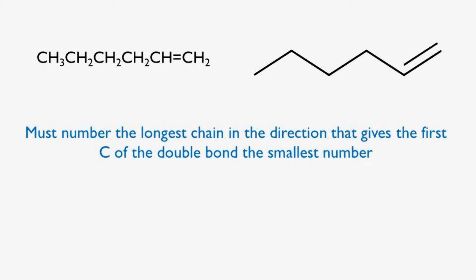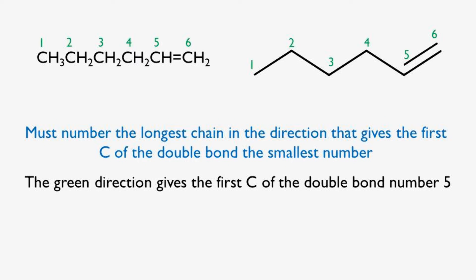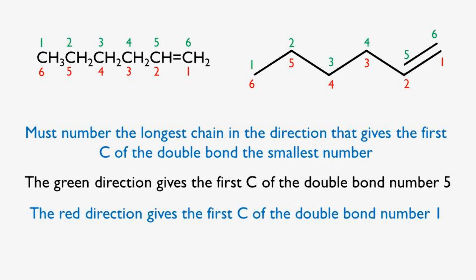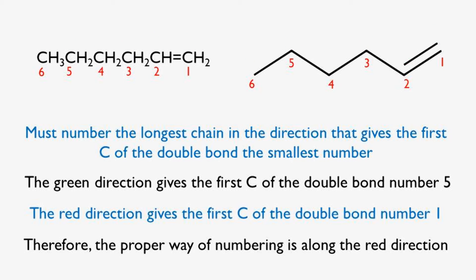Rule number one. We must number the longest chain in the direction that gives the first carbon of the double bond the smallest number. If we look at the green direction, we have six carbons. In the red direction, the double bond starts at carbon number five, whereas in the red direction the double bond starts at carbon number one. Therefore, the proper way of numbering is along the red direction because it gives the double bond carbon the smallest number.